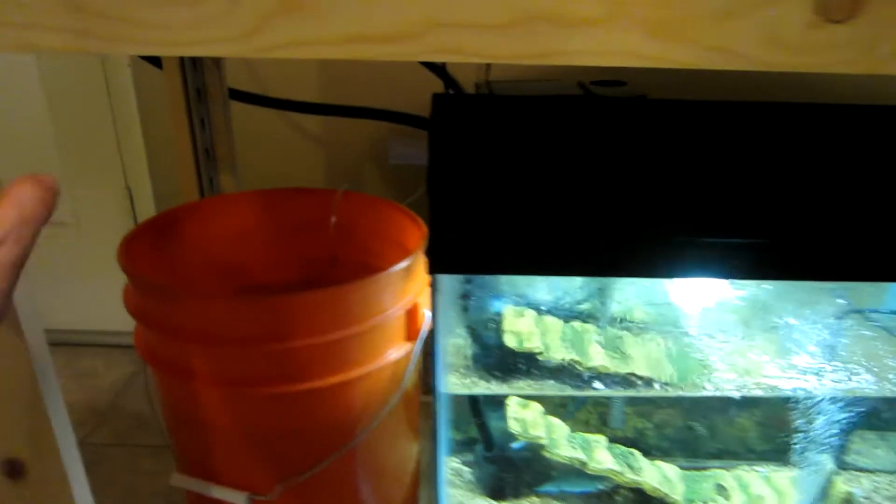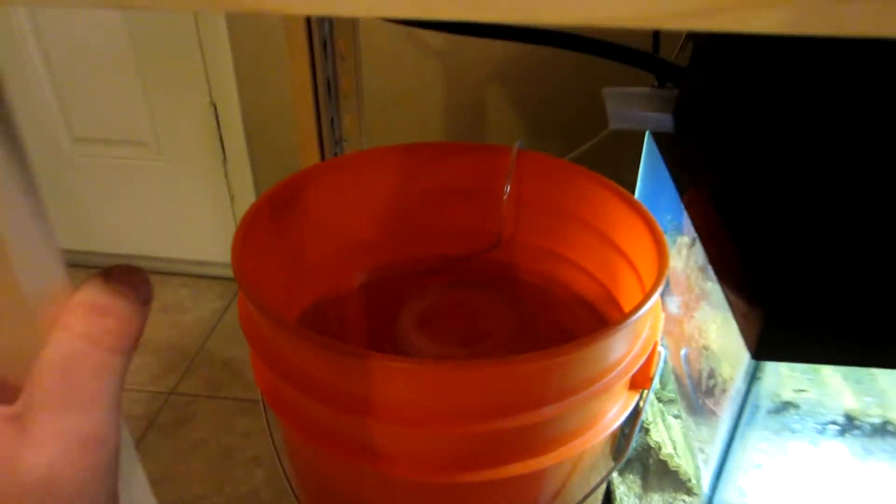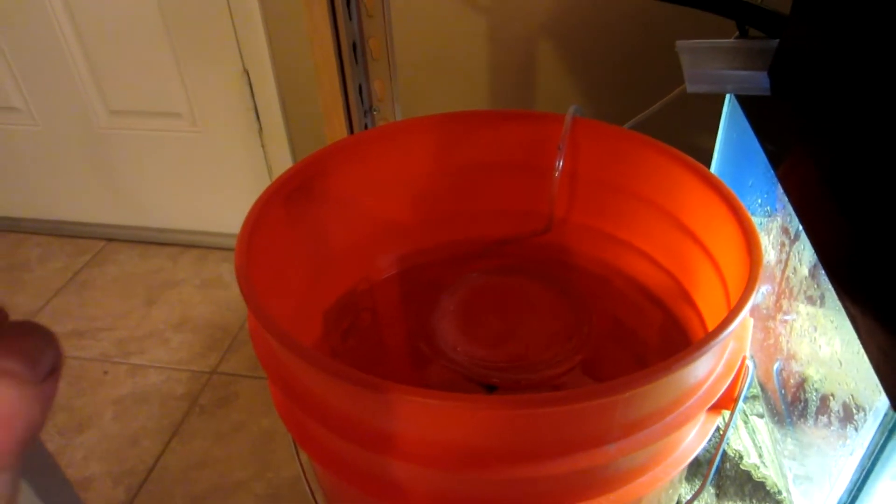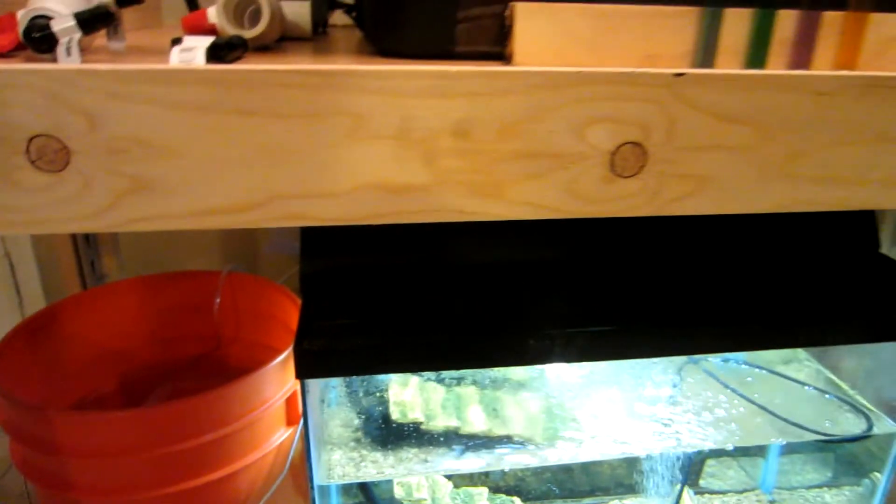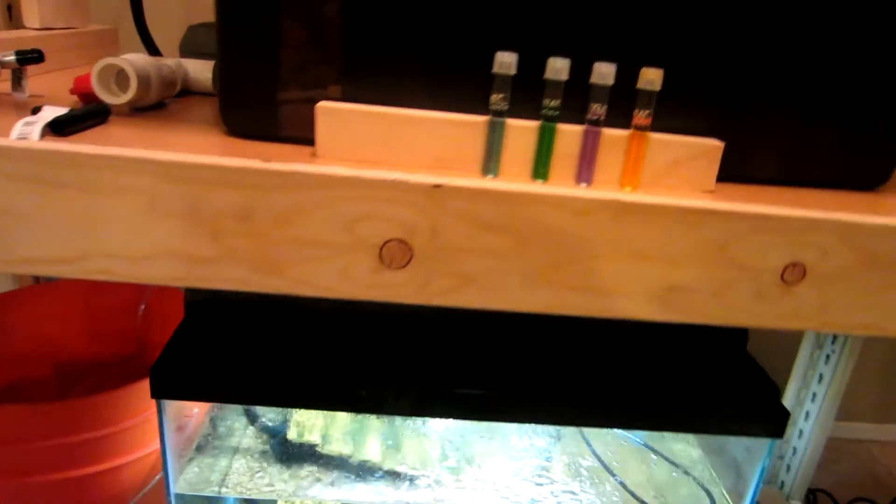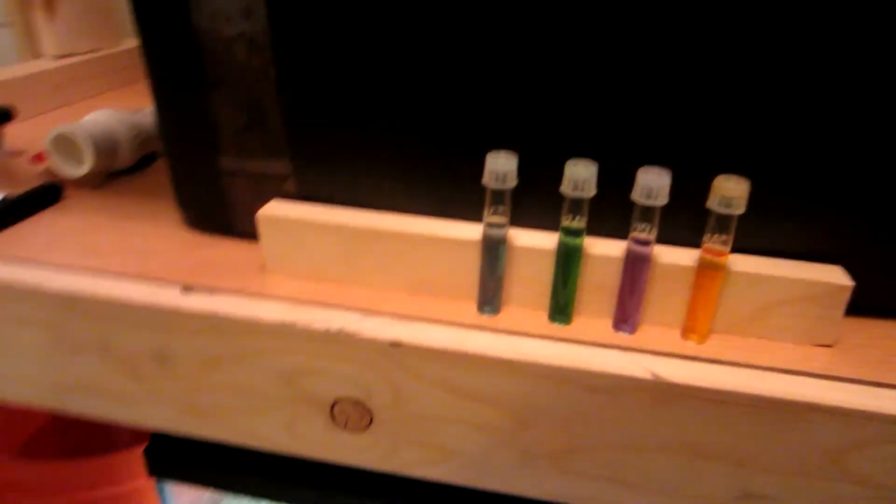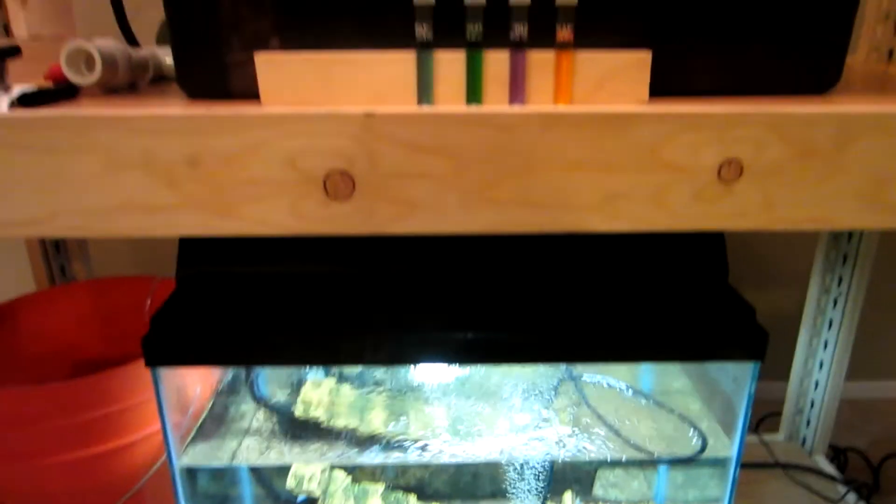I have this bucket here filled with tap water and an air stone inside, letting that run for a couple days to help take the chlorine out of the water. Then I can add it, and it won't hopefully kill the bacteria that's growing in my grow bed.